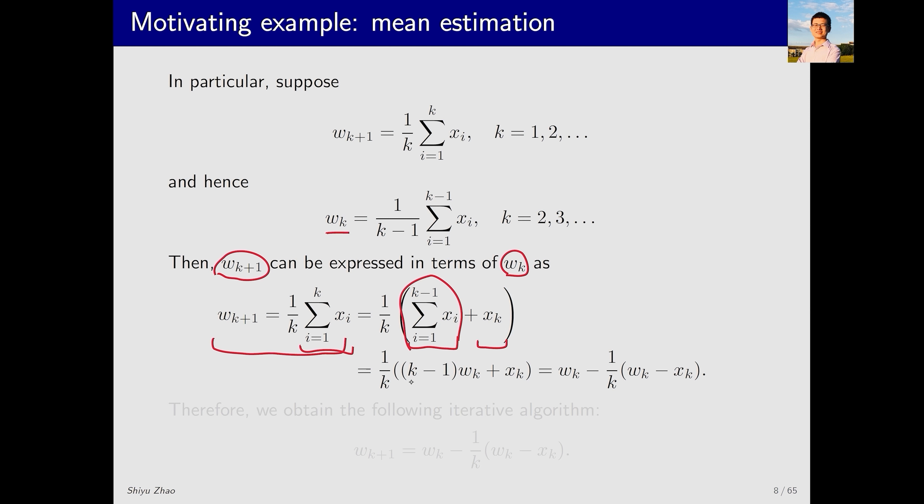This part is related to w_k. If we multiply this by w_k, we will see that this sum is equal to (k-1)w_k. By reorganizing this equation, we get this new equation.